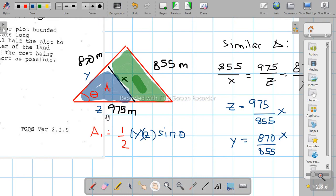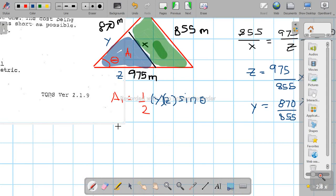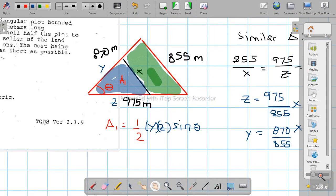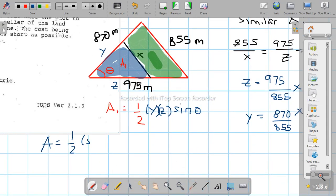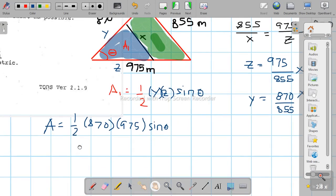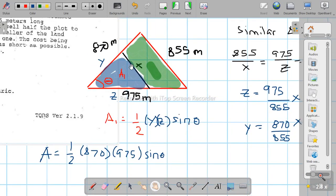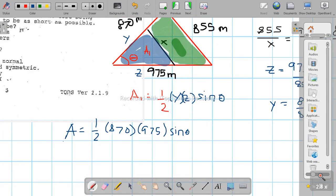Y equals 870 over 855 times X. So we have two values in terms of X that we need. The large area is just 1/2 times 870 times 975 times sin theta. When we divide this by 2, that gives us area A1.